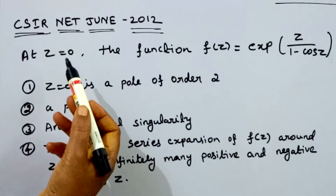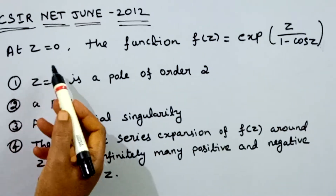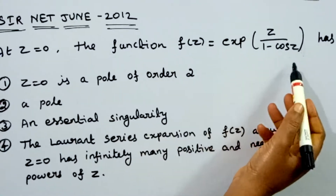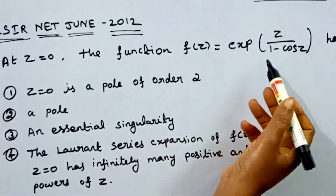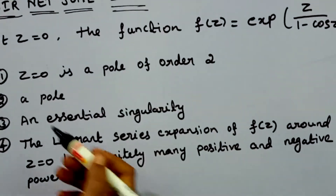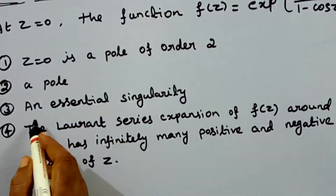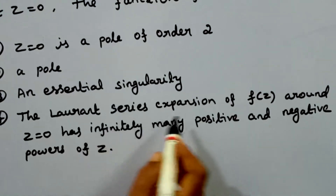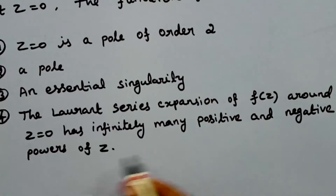Hello students. This is a CSIR NET June 2012 question that discusses at z equal to 0, the function f of z equal to exponential of z divided by 1 minus cos z. The options are: it has a pole, it is an essential singularity, or the Laurent series expansion of f of z around z equal to 0 has infinitely many positive and negative powers of z.